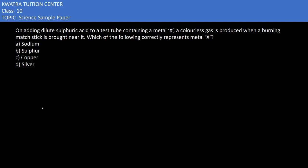Here in the 4th part it says on adding dilute sulfuric acid to a test tube containing a metal X, a colorless gas is produced. When a burning match stick is brought near it, which of the following correctly represents metal X? Now we have to think about which metal X is going to react with the sulfuric acid.